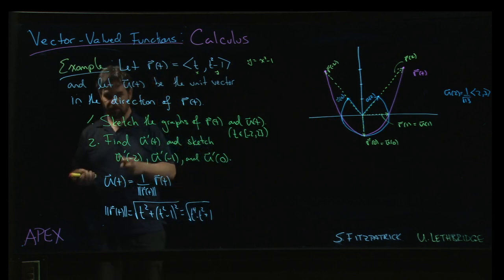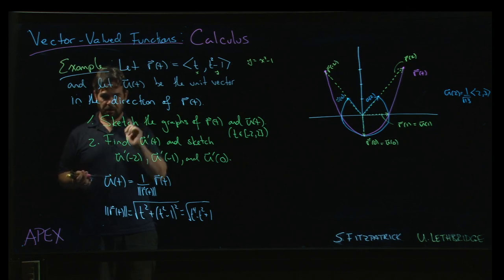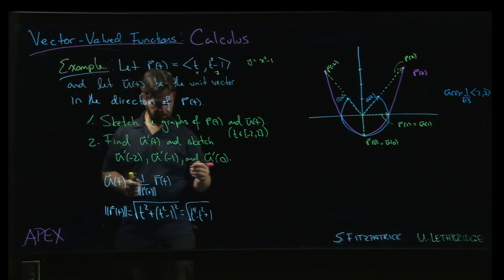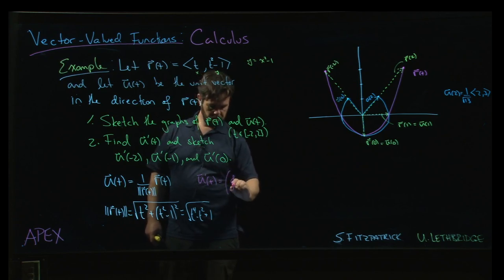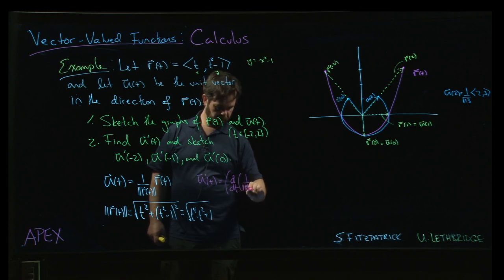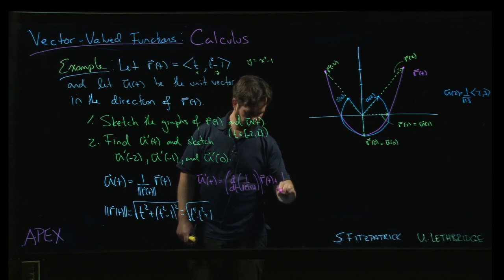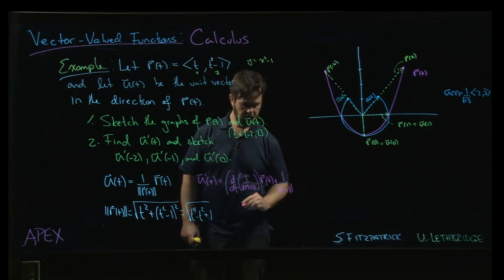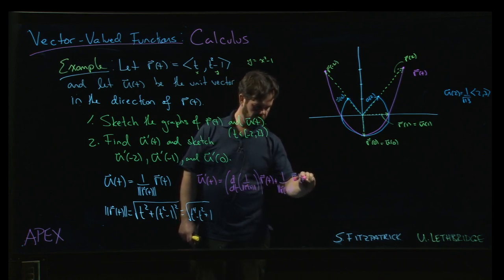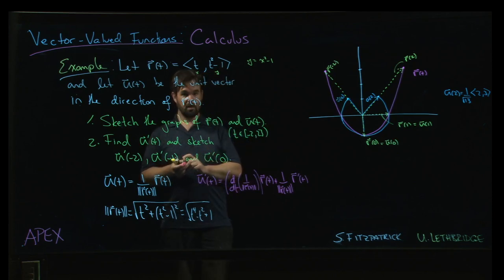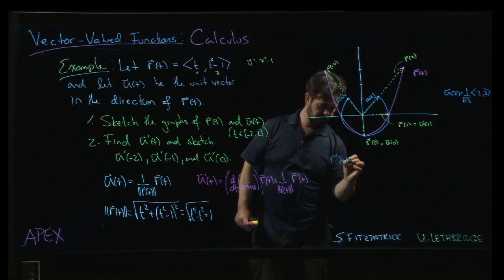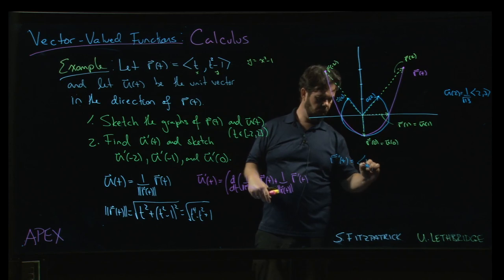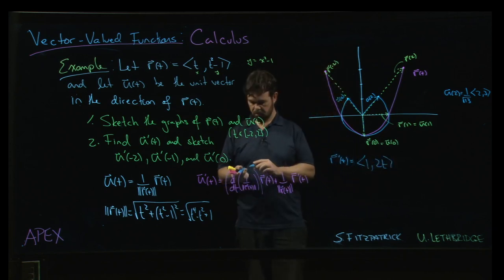Now the second part says find u prime. So from here, using the product rule property that we saw in the previous video, u prime will be the derivative of 1 over the magnitude of r times r, plus 1 over the magnitude of r times r prime. We have a product rule. So we need to work out some derivatives. Now some of them are easy and some of them are a little bit harder. r prime of t is the easy derivative: derivative of t is 1, derivative of t squared is 2t.